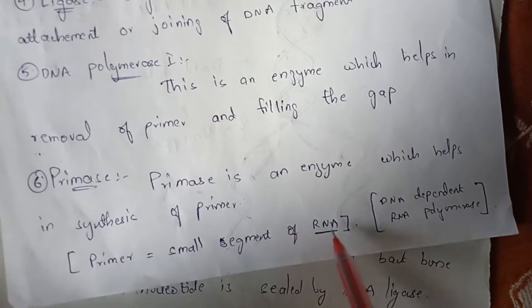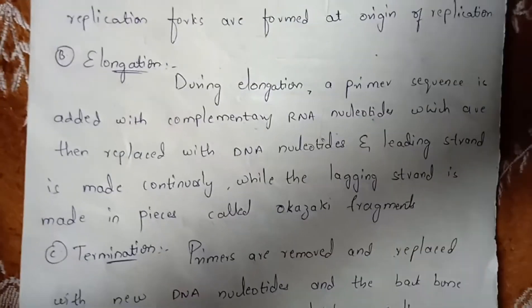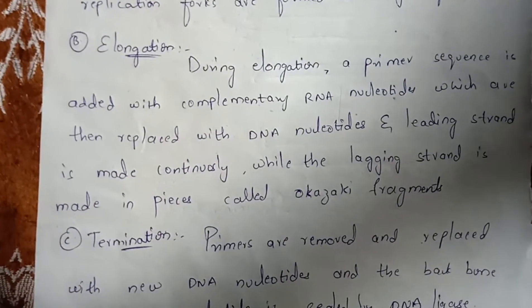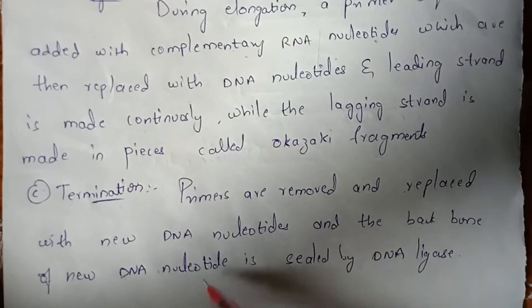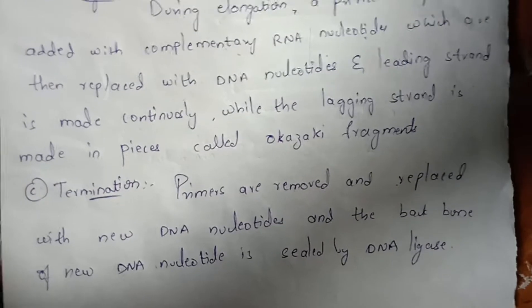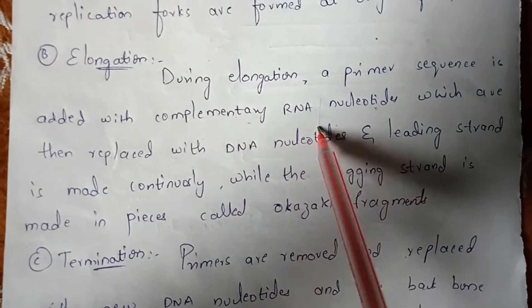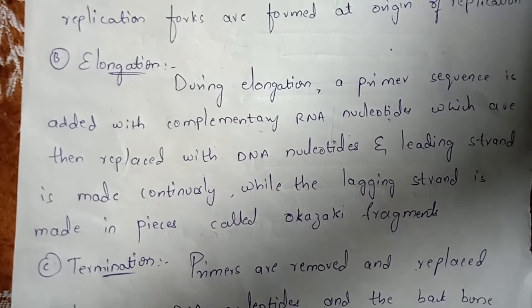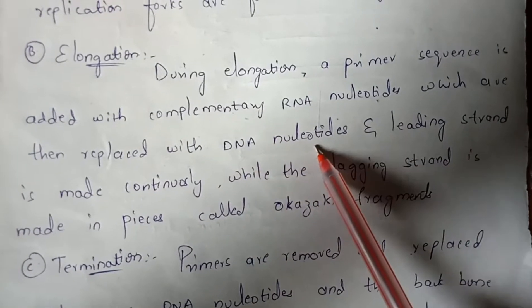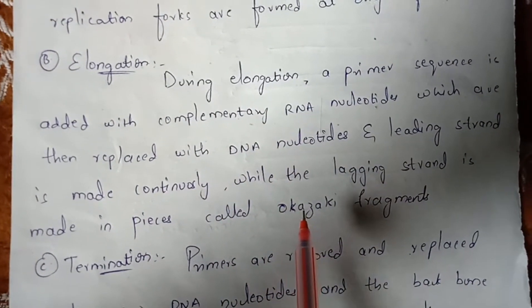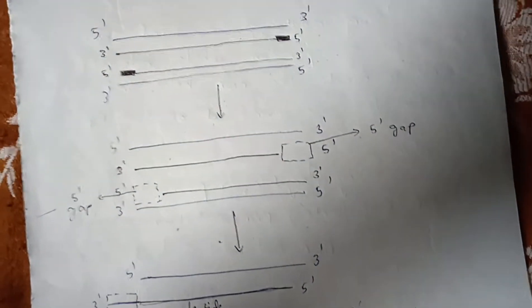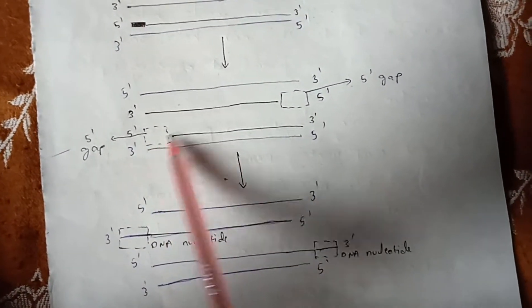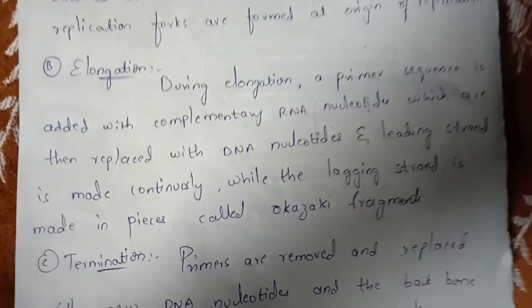Complementary RNA nucleotides are segments of RNA — that is, nucleotides present in the RNA such as adenine, guanine, cytosine, thymine, and uracil. These all consist of RNA nucleotides. The primer sequence is added with the complementary RNA nucleotides, along with DNA nucleotides. The RNA nucleotides are then replaced with DNA nucleotides — the RNA nucleotide gap is filled with DNA nucleotides.